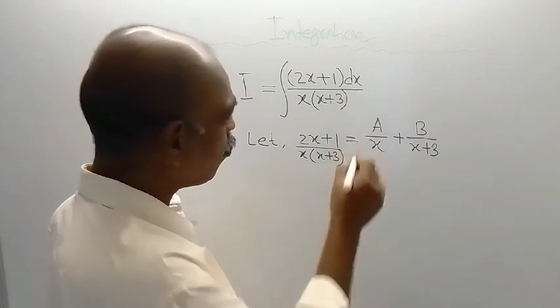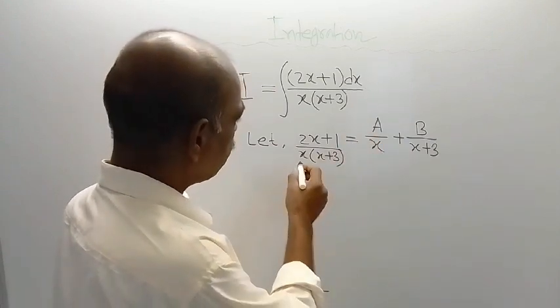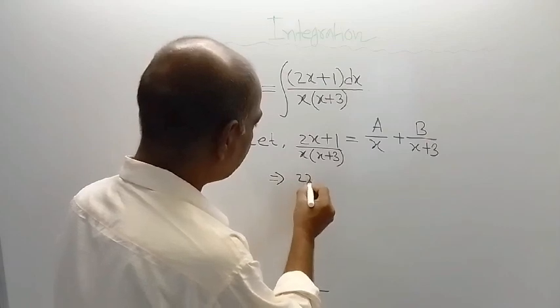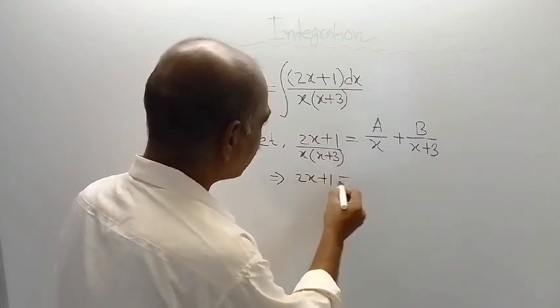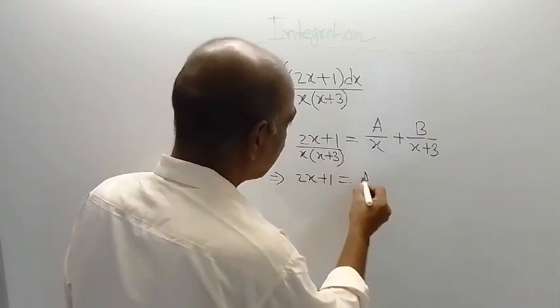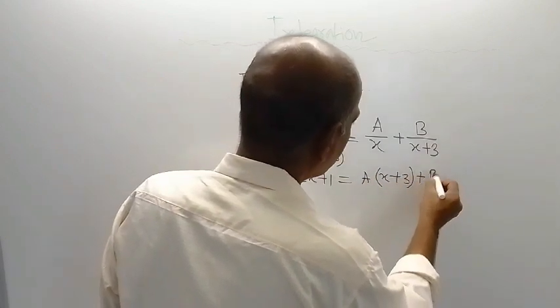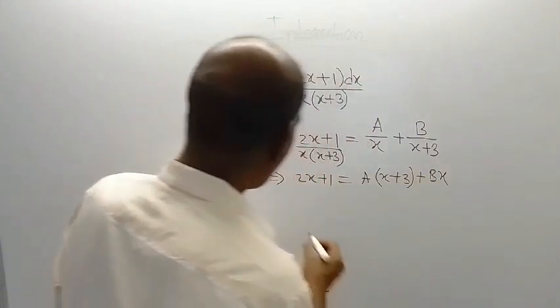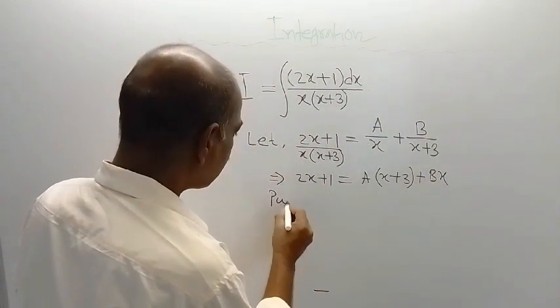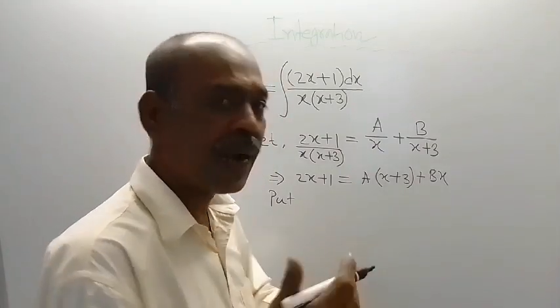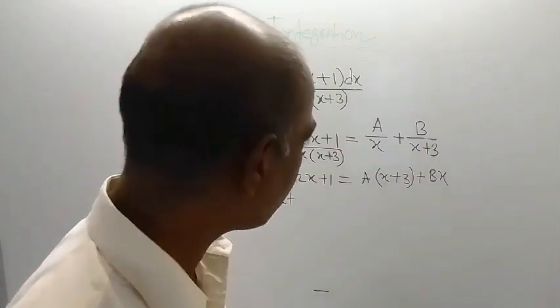Now multiply both sides of this by x into x plus 3. So on multiplication what you are getting is 2x plus 1 is equal to A into x plus 3 plus B into x. Now to evaluate, for the evaluation of A and B, you can put arbitrary values of x.